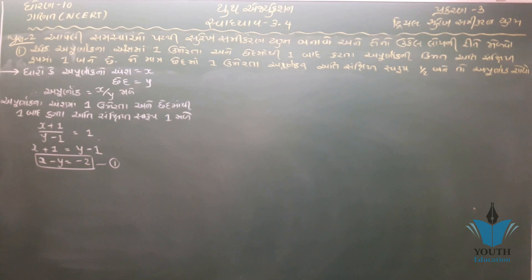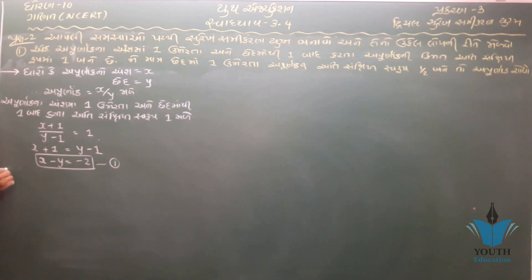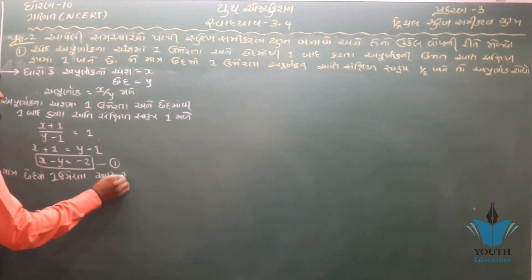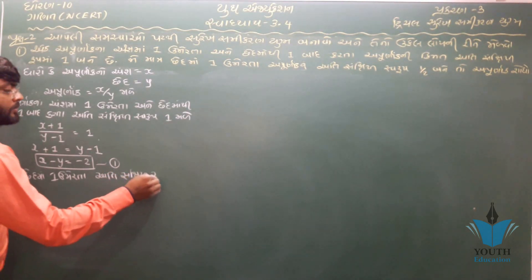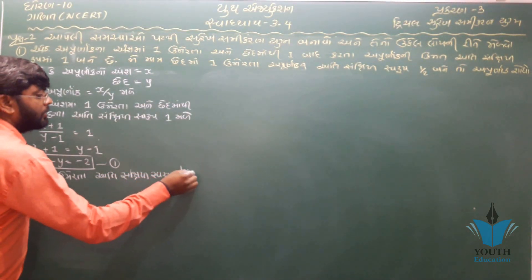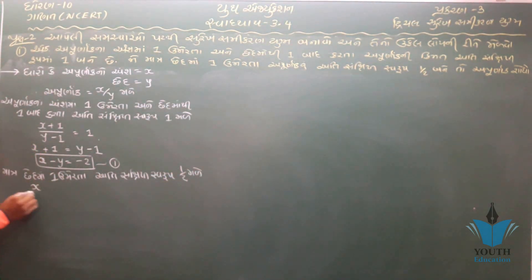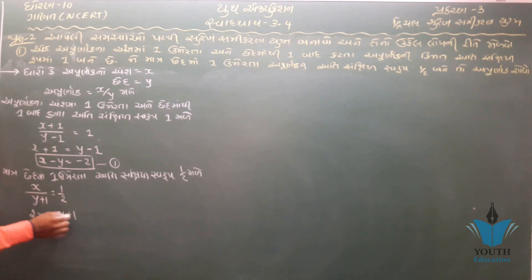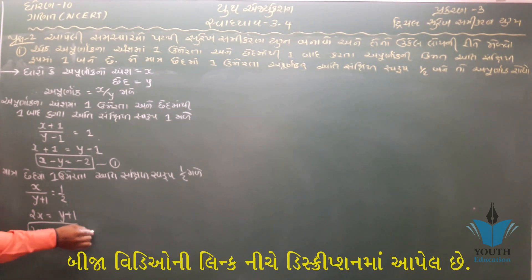જો માત્ર છેદ માં એક ઉમેરવામાં આવે તો અપૂર્ણાંકનો અર્થ સંક્ષિપ્ત સ્વરૂપ 1 બટા 2 મળે. તો છેદ માં એક ઉમેરતાં, x ના છેદ માં એક ઉમેરતા, y + 1 = 1/2. સામે ગુણતા 2x, (y+1) જતા y + 1, 2x − y = 1. બે પરિણામ આવ્યાં આપણી પાસે. [Setting up two equations from the two conditions given in the fraction problem.]